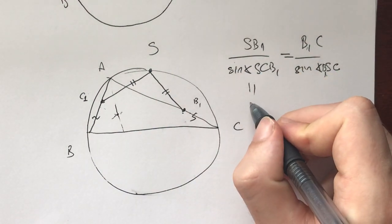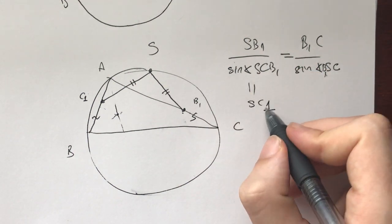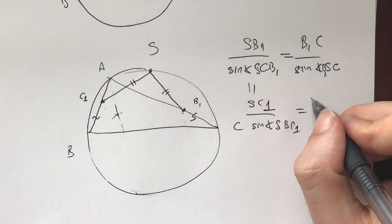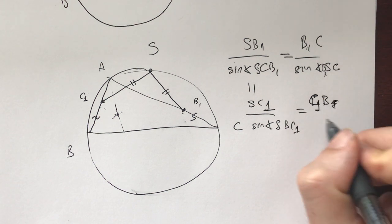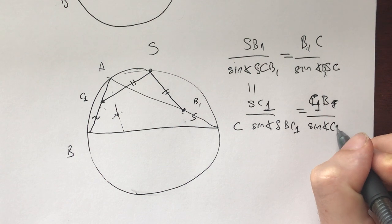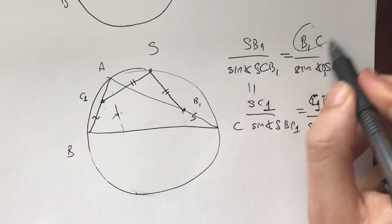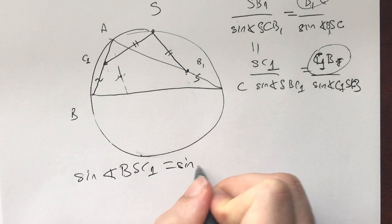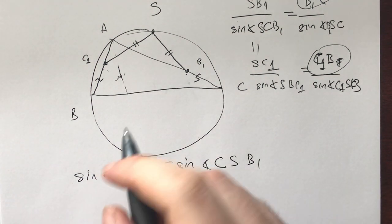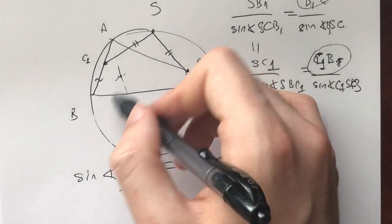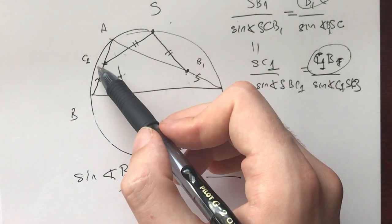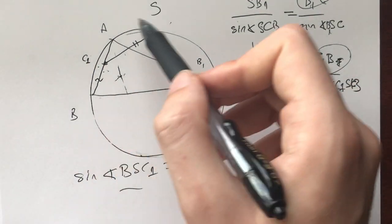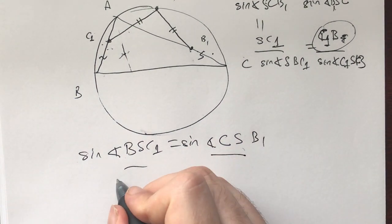Similarly, SC1 over sin(angle SBC1) equals C1B over sin(angle C1SB). Since SB1 equals SC1 and the angles SCB1 and SBC1 are equal, this gives us that sin(angle BSC1) equals sin(angle CSB1). Their sum is less than angle C1SC, which is less than 180, so they can't sum to 180. Therefore these two angles are equal.